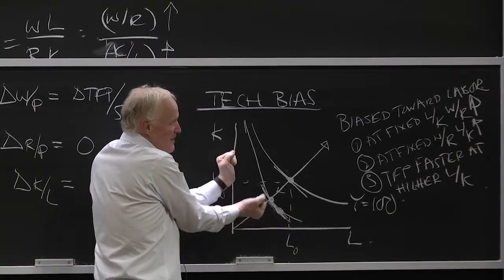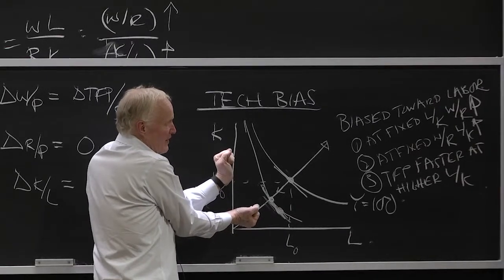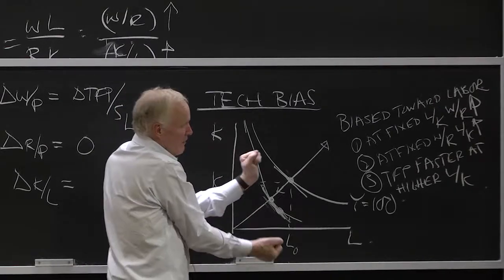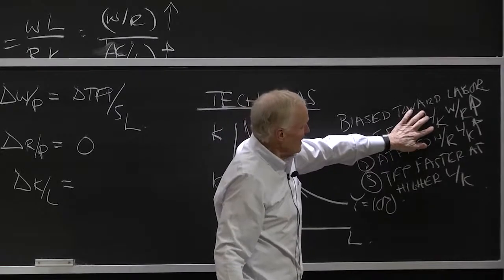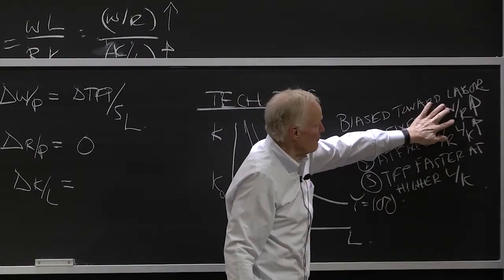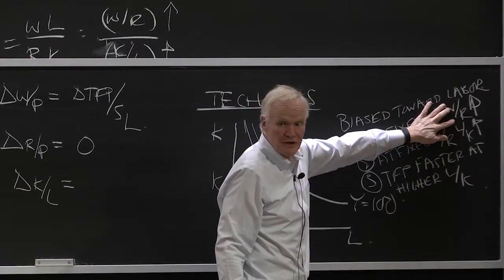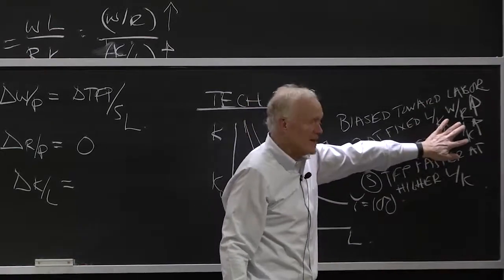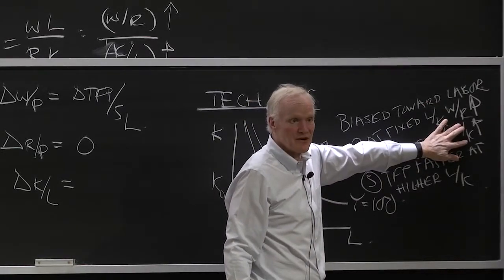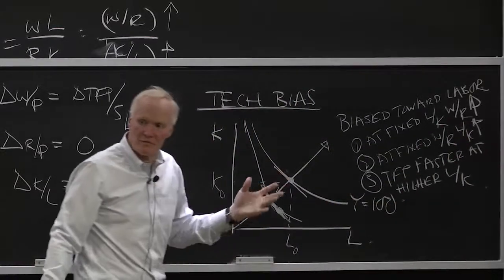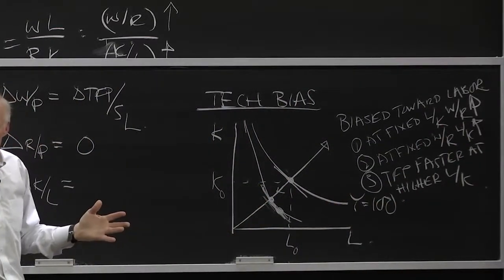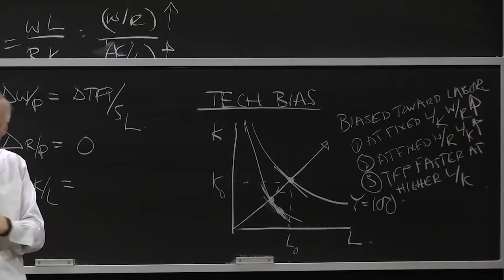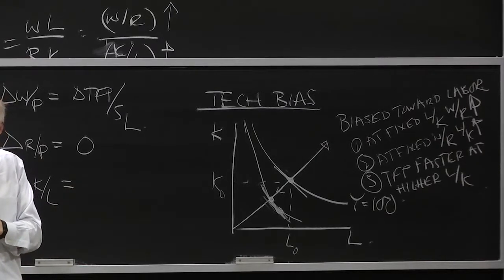Now, you can think about, what's the effect of this going to be on labor share? Well, if L over K is fixed, W over R is going up, it's going to raise labor share. If W over R is fixed, L over K going up, also going to raise labor share. So all these things are going to be pushing up labor share if it's biased toward labor, and it's going to be pushing up capital share if it's biased toward capital.